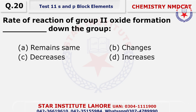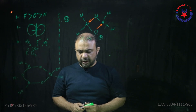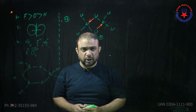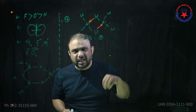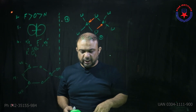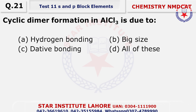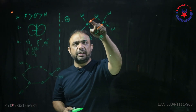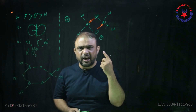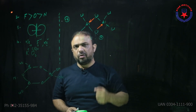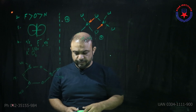Question number 20: Rate of reaction of group 2 oxide formation — in any group, the rate of reaction increases top to bottom because the ease of forming the compound increases. Question number 21: Cyclic dimer formation in AlCl₃ is due to dative bonds — coordinate covalent bonds. In one Al₂Cl₆ structure, the total number of dative bonds is 2.